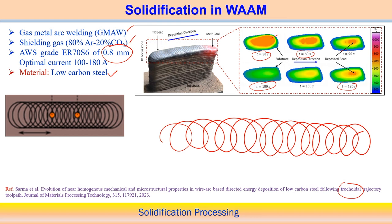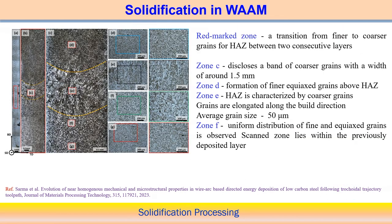The high cooling rate in this process has some influence on the solidified structure during deposition of low carbon steel. In the deposited component, the red marked zone shows a transition from fine to coarse grain, observed in the heat affected zone, which typically happens between two successive consecutive layers.